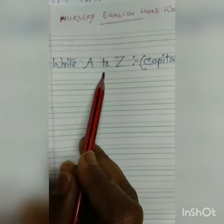Hello my dear students, today's date is 11th of December 2020. Class nursery, subject English homework class. Today we learn to write A to Z in capital letters. We did it before and today we'll do it again.